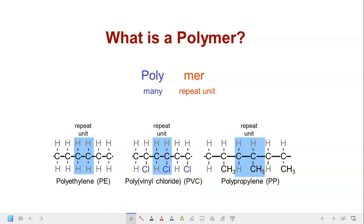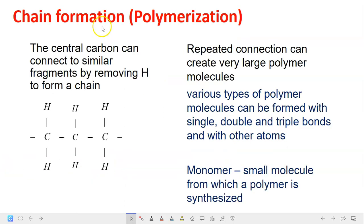Each with their own respective repeat units. So polymer is formed by the process what we call as polymerization, in which the central carbon, the repeat unit, it actually can connect to similar fragments by just removing the hydrogen atom to form a chain.